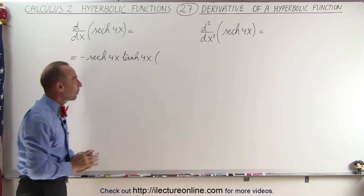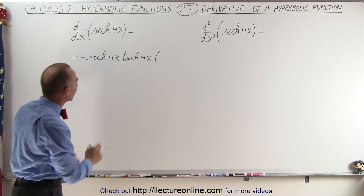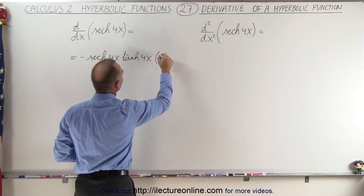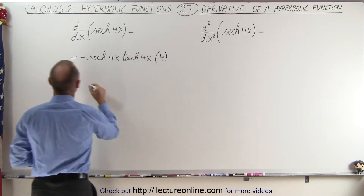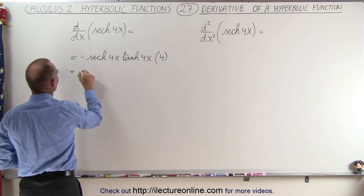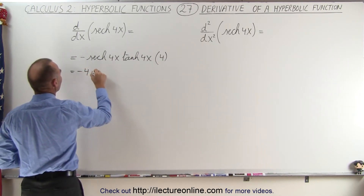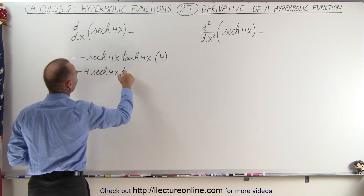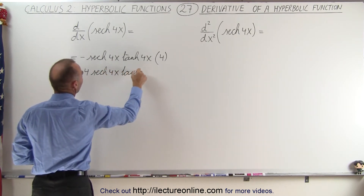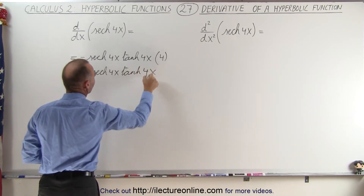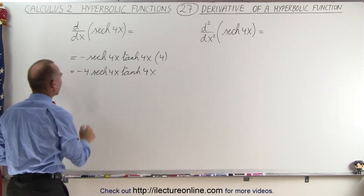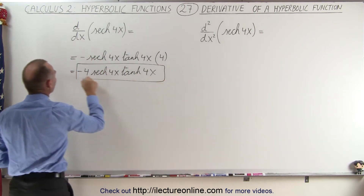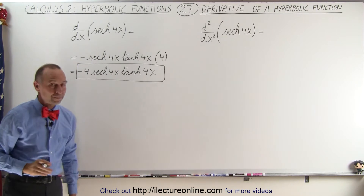When dealing with hyperbolic functions, it still works the same way as with regular trig functions. The derivative of the inner function 4x is 4, so this gives us minus 4 times the hyperbolic secant of 4x times the hyperbolic tangent of 4x. That is the derivative of the hyperbolic secant of 4x.